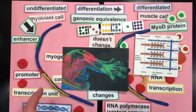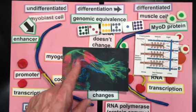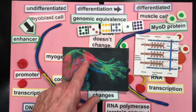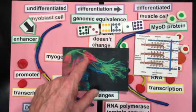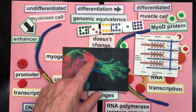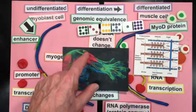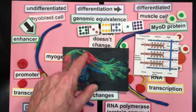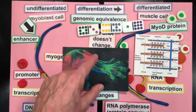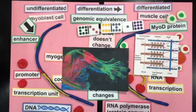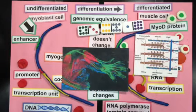As a last idea, students can wonder about what gene scientists connected the jellyfish gene to in order to get differentiating muscle cells to glow red when they put the modified gene back into a mouse.